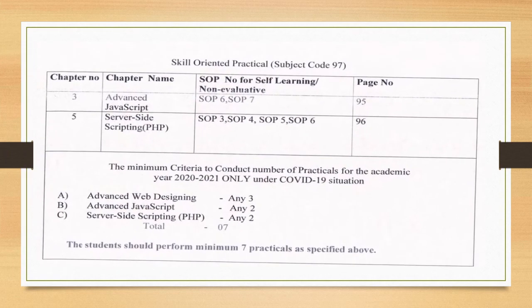For practicals in 12th standard science, Chapter 3 — Advanced JavaScript — Skills Oriented Practical 6 and 7 on page number 95 are being deducted. Also, Server Side Scripting Skills Oriented Practical 3, 4, 5, and 6 on page number 96 have been deducted.